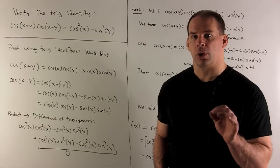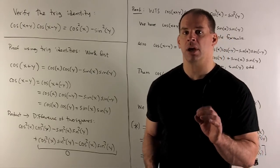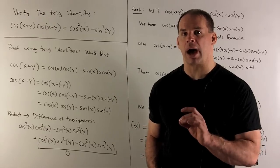Verify the trig identity: cosine of x plus y times cosine of x minus y equals cosine squared of x minus sine squared of y.